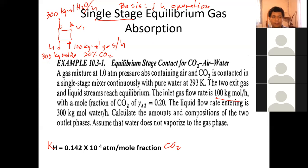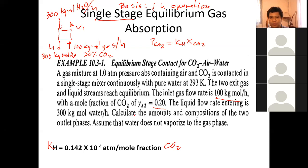To find the amount of CO2 that transfers to L1, we use Henry's law. Henry's law says the partial pressure of CO2 is directly proportional to the mole fraction of CO2. What is the partial pressure of CO2? The gas is 20% CO2 at a total pressure of 1 atmosphere.